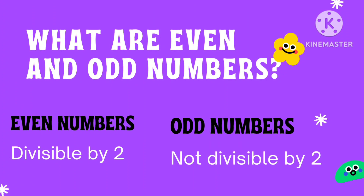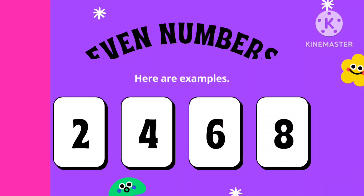What are even and odd numbers? Even numbers are divisible by 2. Odd numbers are not divisible by 2. Even numbers: 2, 4, 6, 8 are examples — they are all divisible by 2.